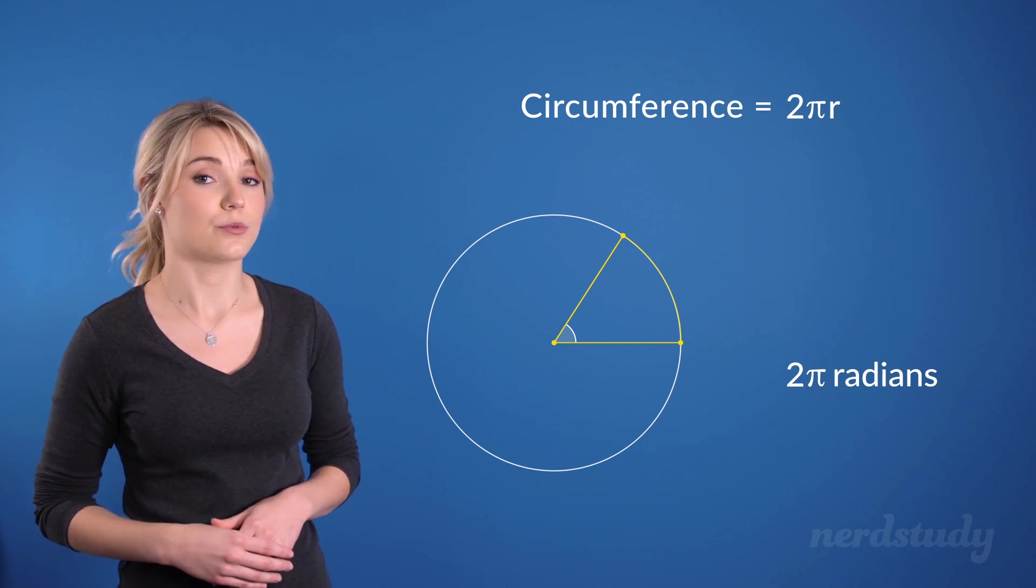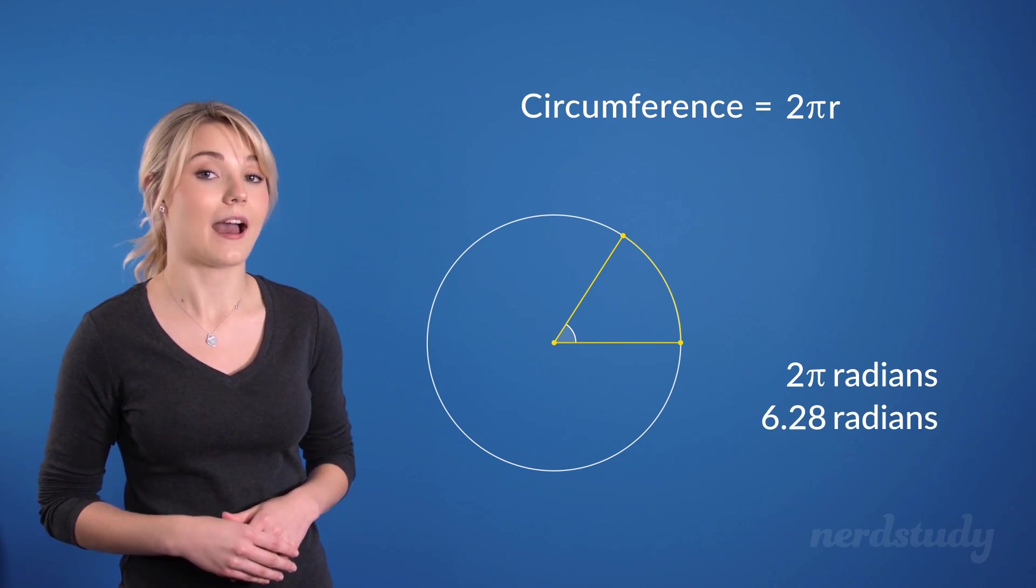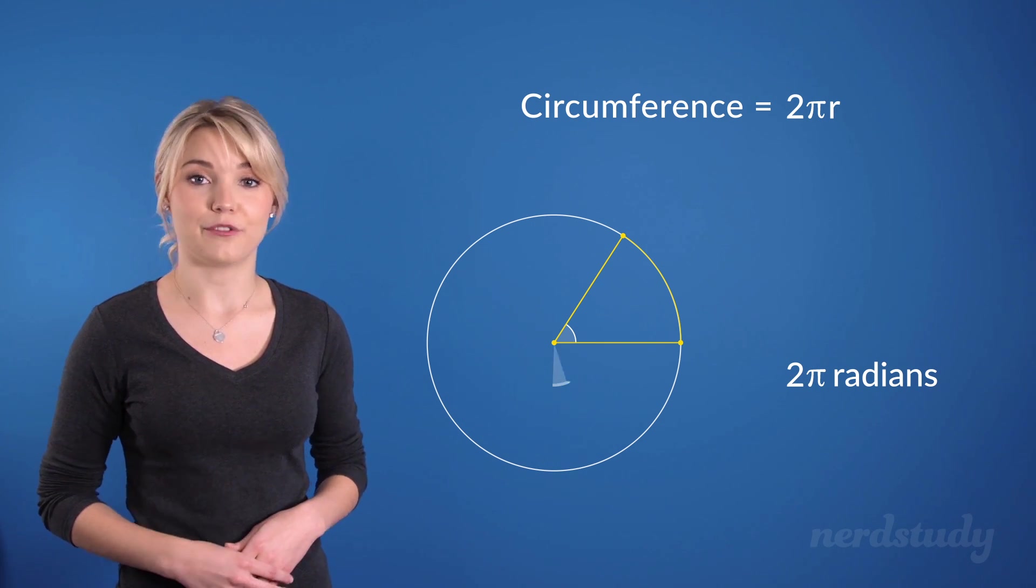So 2 pi radians, which is roughly 6.28 if you actually simplify 2 pi, make up the angles to a full circle.